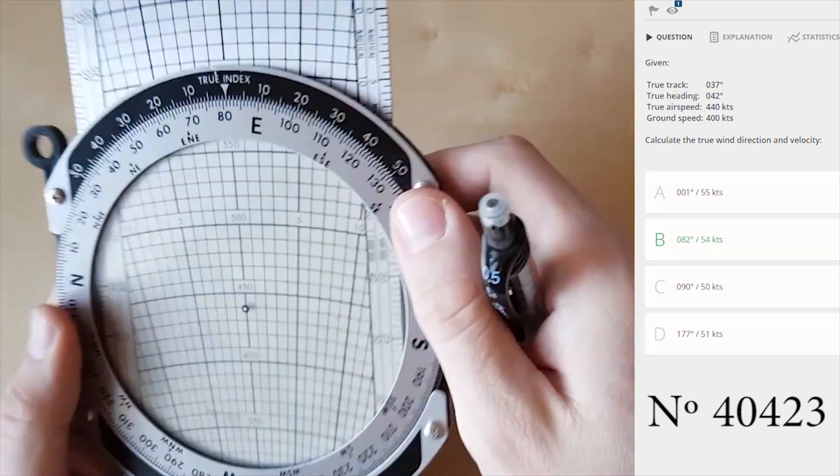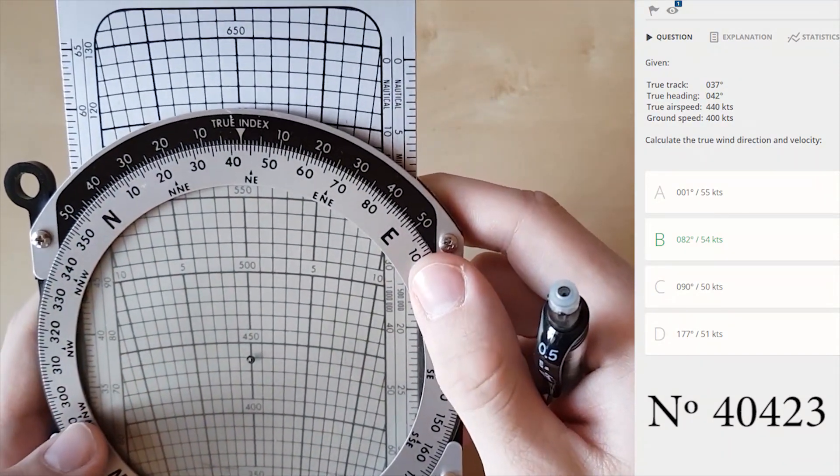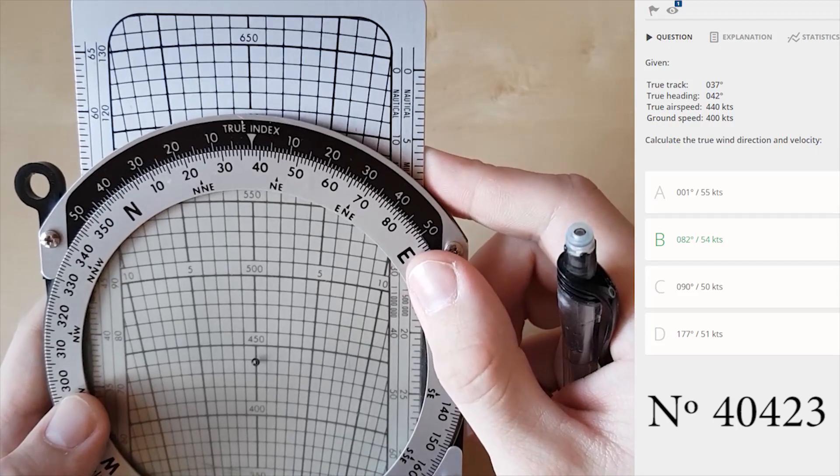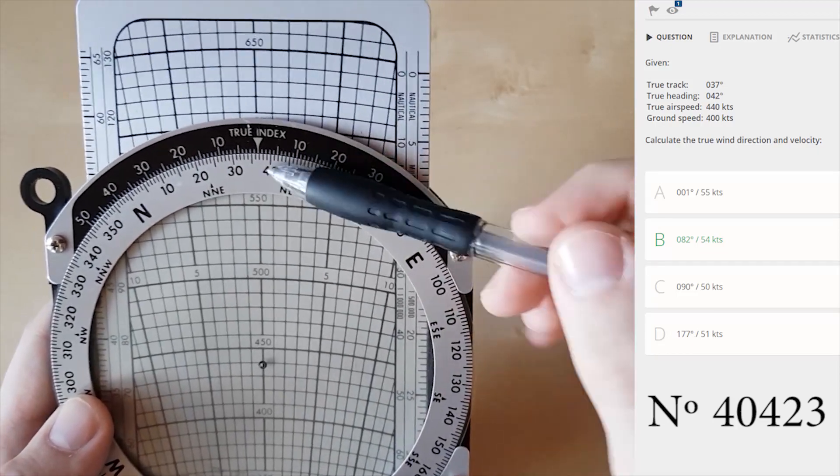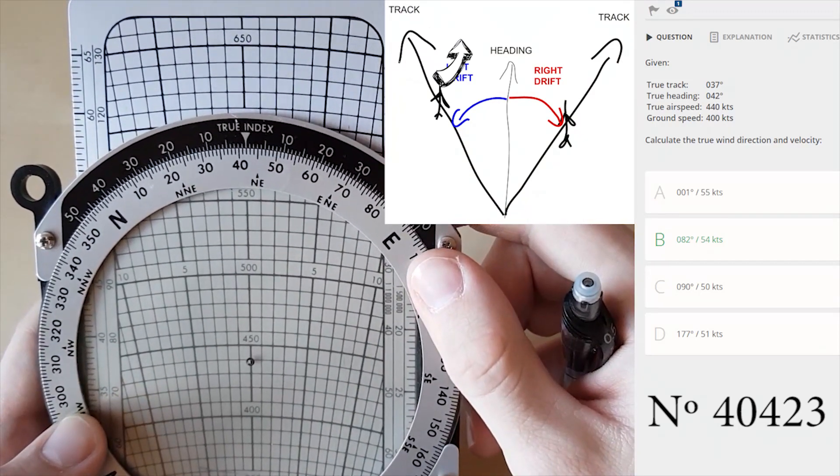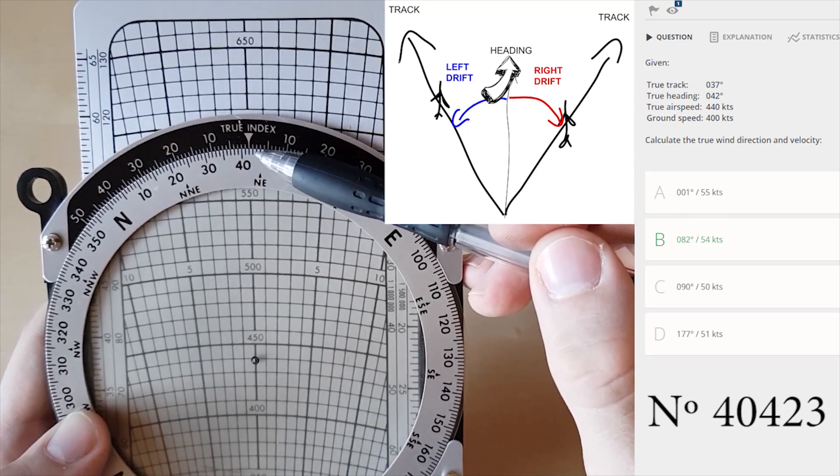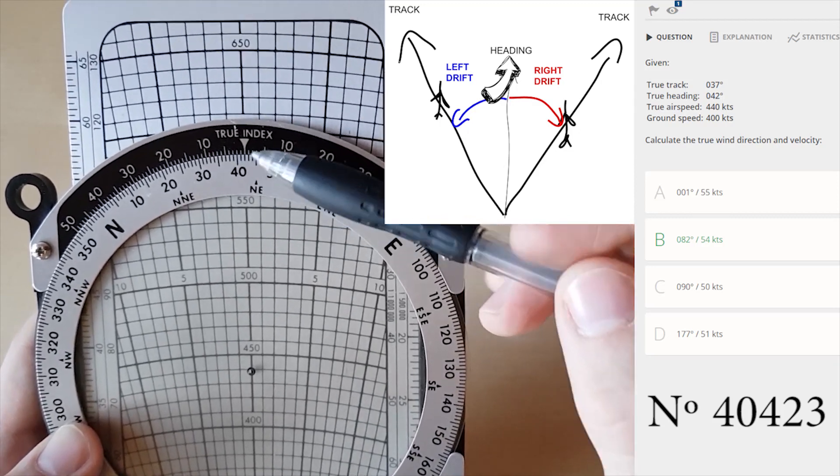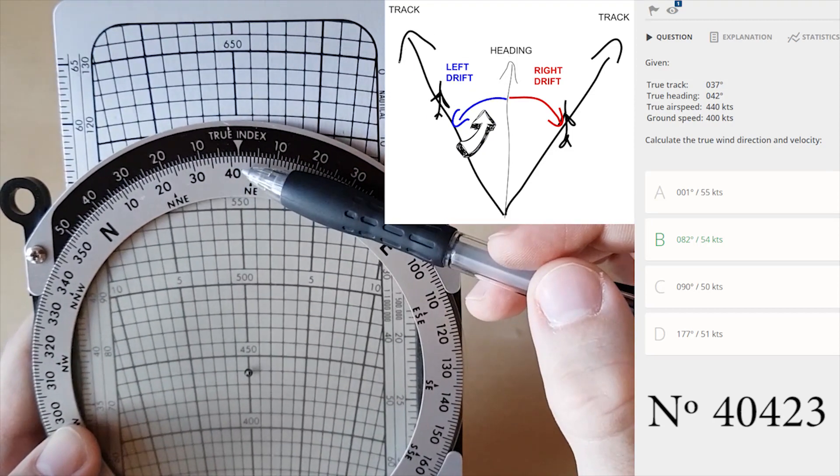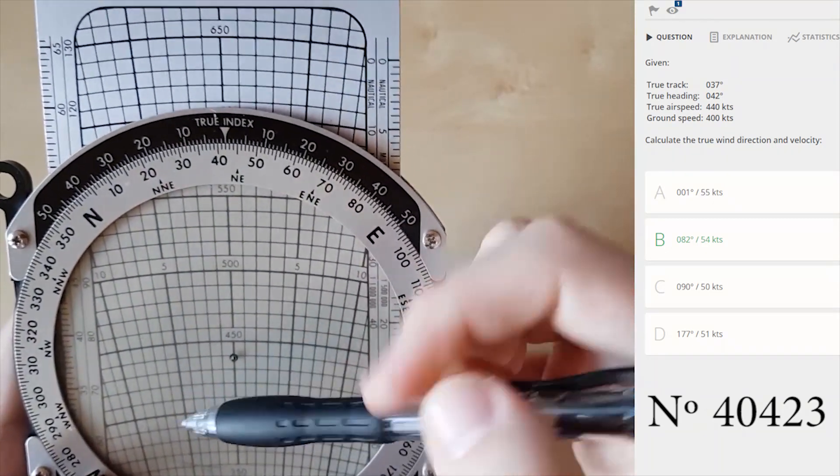Next step is to find the drift. You can find the drift by marking here - for example, 37 true track is here and the true heading is 42 which is here. As you know from previous question, the drift is from heading to track, so it's in left direction. It's difference of five degrees so I mark five degrees on the left side.